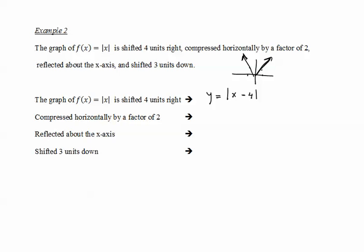Next, we compress it horizontally by a factor of two. Because we are compressing horizontally — not stretching vertically — we multiply the two next to the x, not outside the absolute value. So it becomes y = |2x - 4|.